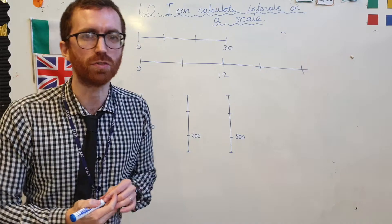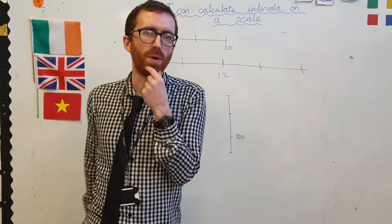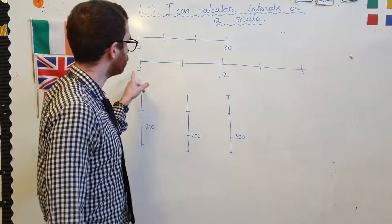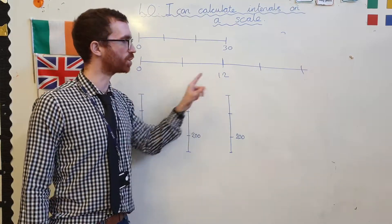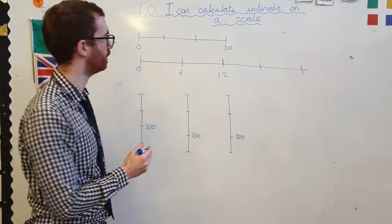I'm using different methods for both of these to work it out. Always easier if I've got a halfway point to work out, isn't it? This one's got a halfway point between 0 and 12. What's half of 12? It's 6. Okay, this must be going up in sixes.